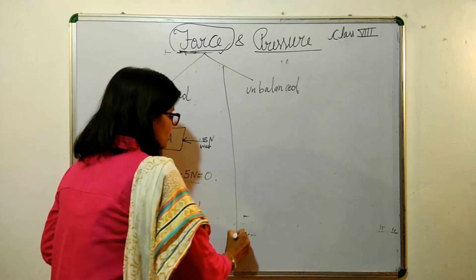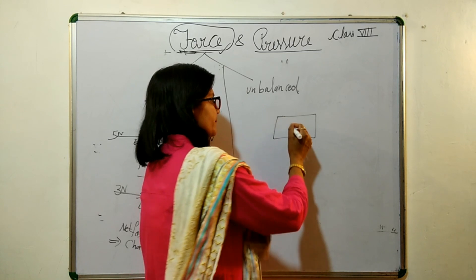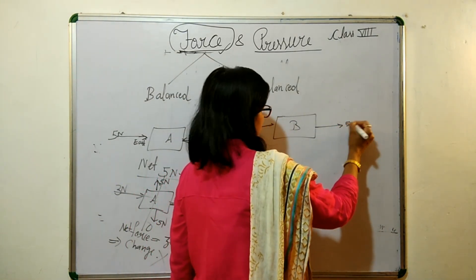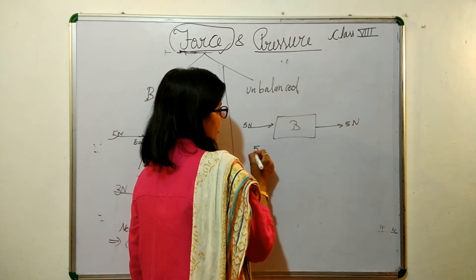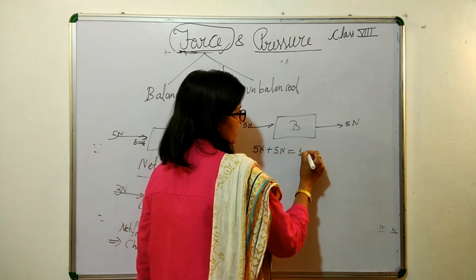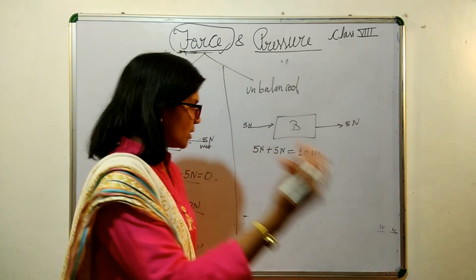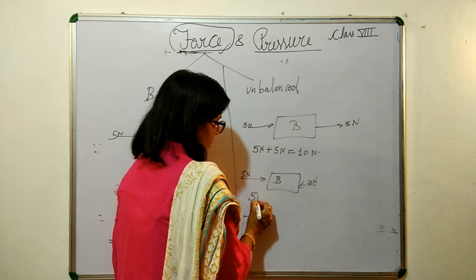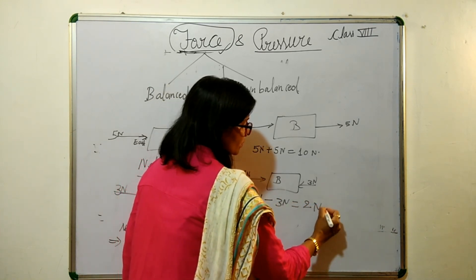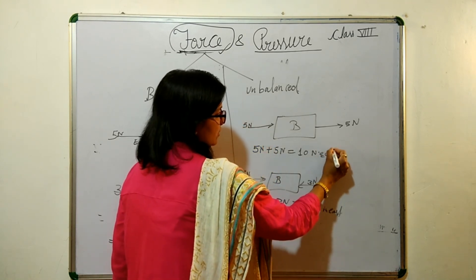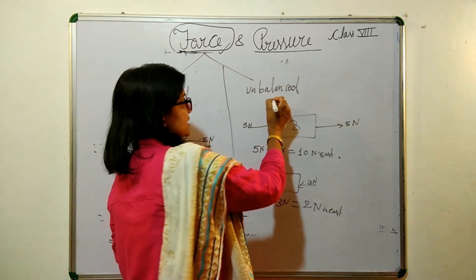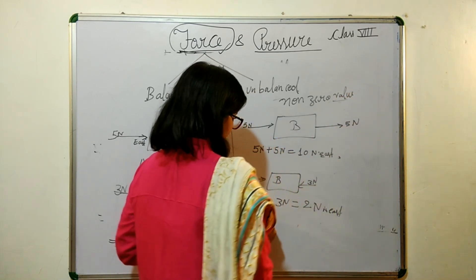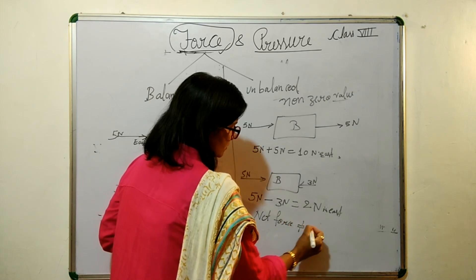In the case of unbalanced force, suppose we apply 5 newton here and again 5 newton here in the same direction — they are added: 5 newton plus 5 newton equals 10 newton, and it will go in the east direction. Or, if you apply 5 newton and 3 newton in the opposite direction, 5 minus 3 equals 2 newton in the east direction. This means the unbalanced force has a non-zero net value.